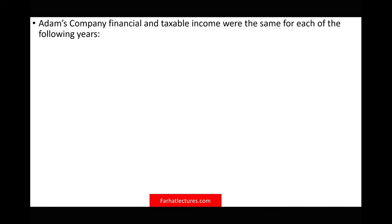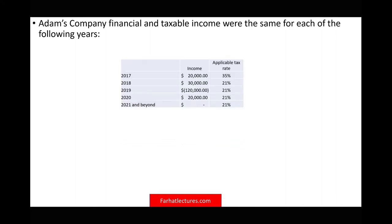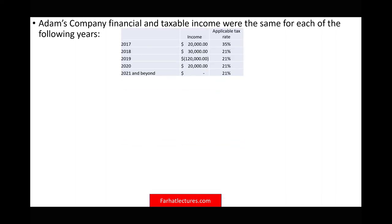The best way to illustrate all these concepts is to work an example. Adam's company — financial and taxable income were the same in the following years. In 2017, taxable income was $20,000 and Adam paid 35%, so $7,000. In 2018, $30,000 times 21% — Adam's corporation pays $6,300. In 2019, Adam's had an NOL of $120,000. In 2020, they expect $20,000 in income. In 2021 and beyond, they expect to have no taxable income.